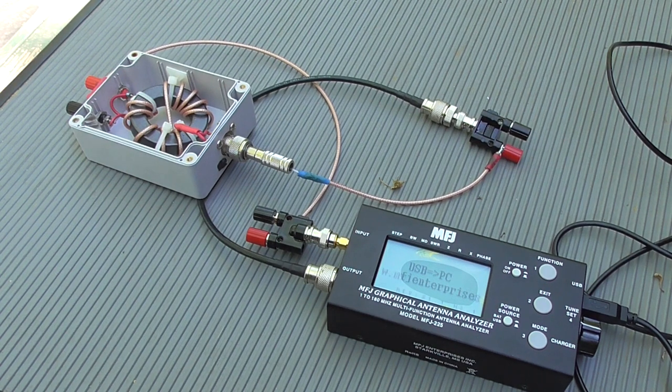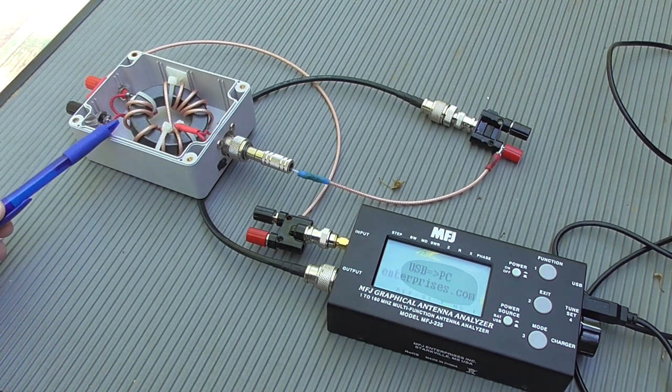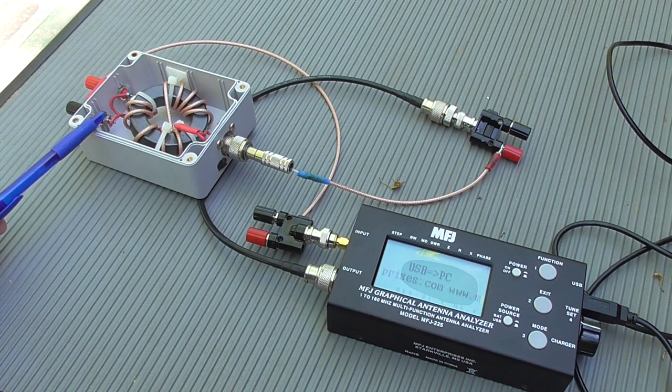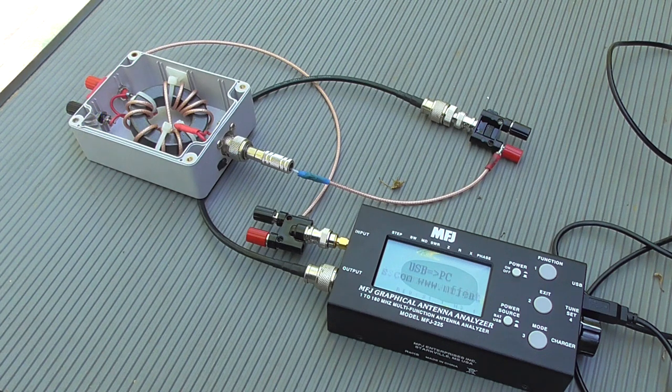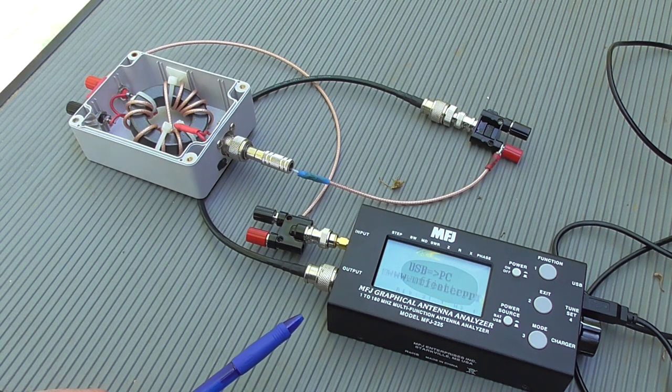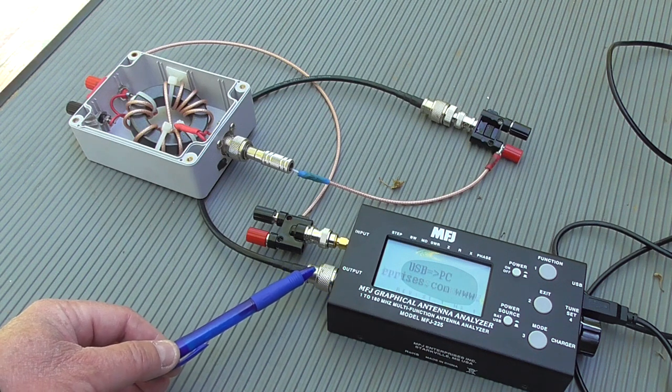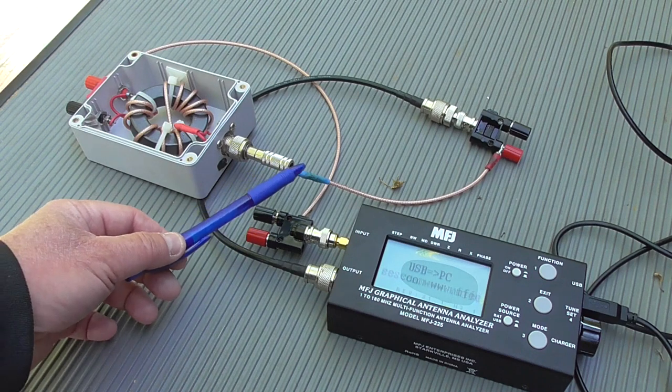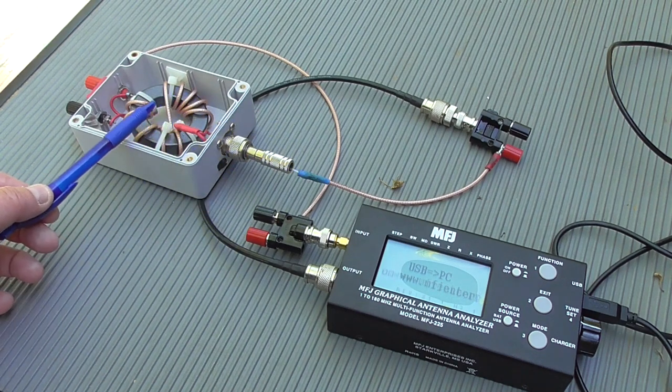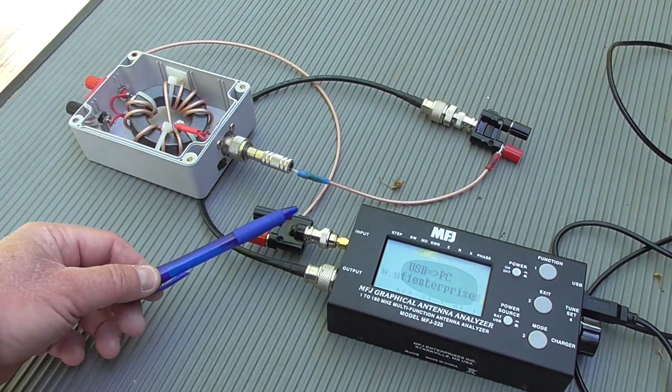So let's go ahead and measure the losses that our ferrite core introduces into our transmission line. For this test, we're going to be using the MFJ225 two-port vector network analyzer. We're going to be taking the output from port one, feeding it into the shield of the coax, through the ferrite core, and back out into the second port.